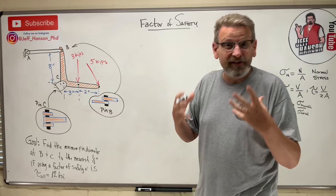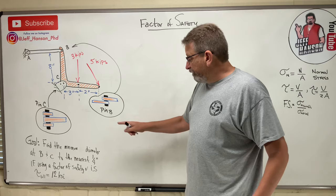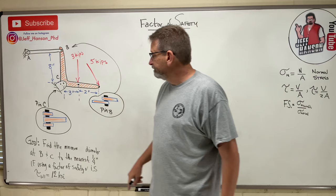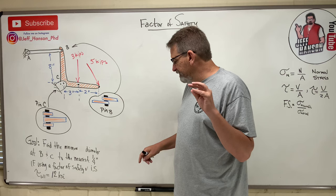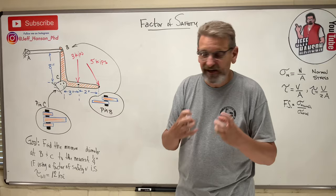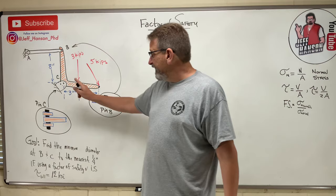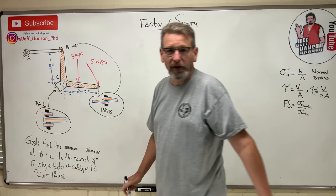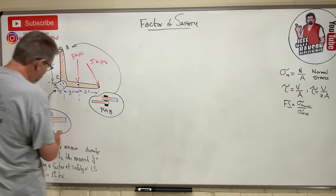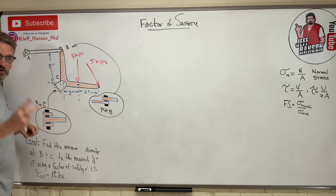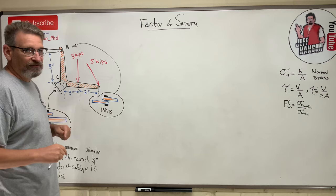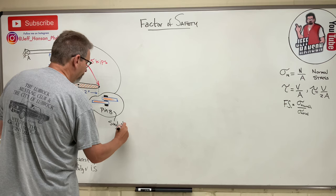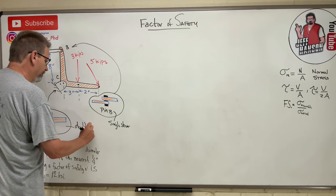Let's work a problem. Find the minimum diameter at pins B and C to the nearest one-quarter of an inch using a factor of safety of 1.5. They give us tau allowable, which is shear stress allowable, equal to 12 ksi. Step one: find the force at pin B and pin C. Pin C - looking at the exploded view - looks like a double shear. There are the tabs and the bar attached in the middle, so I've got to shear it two times - that's double shear. The pin at B looks like a single shear.